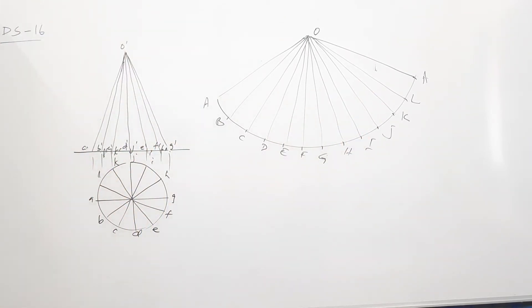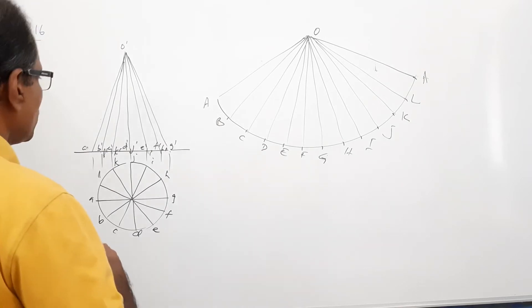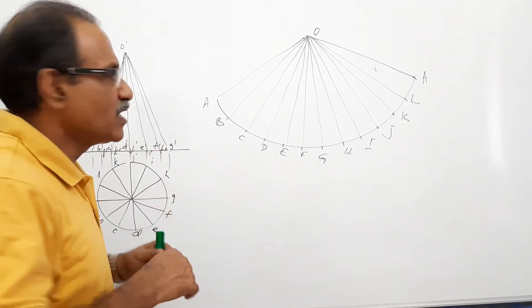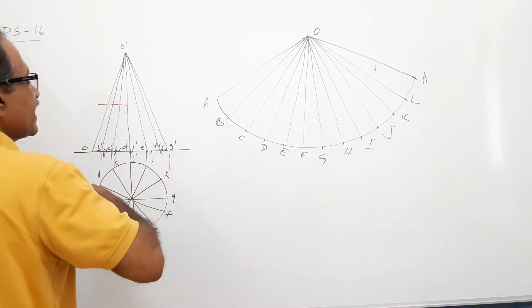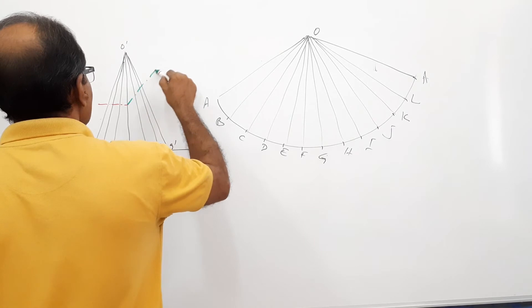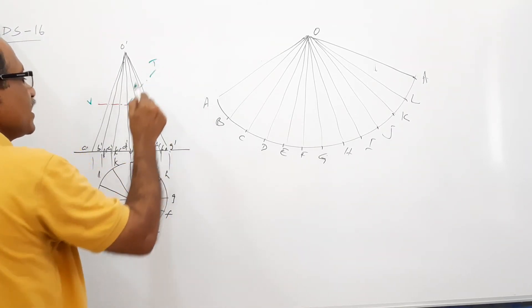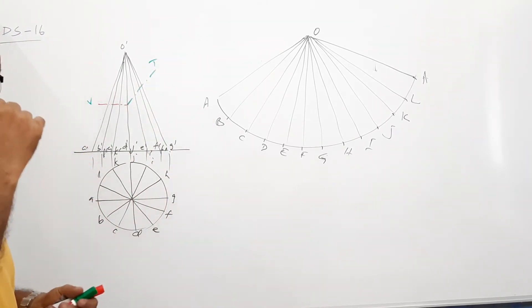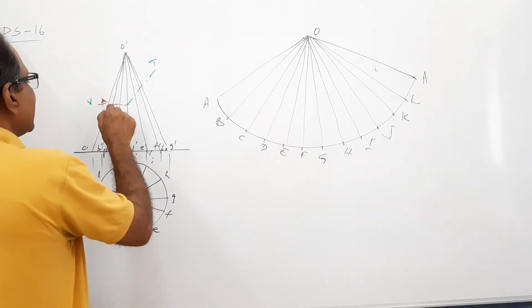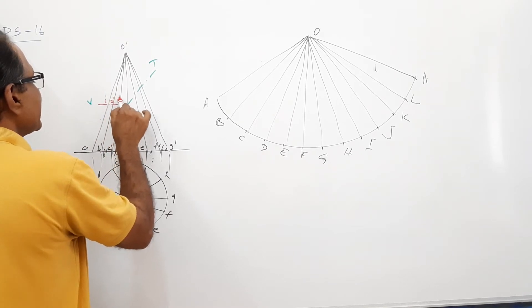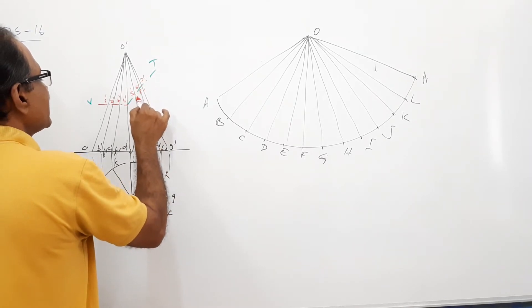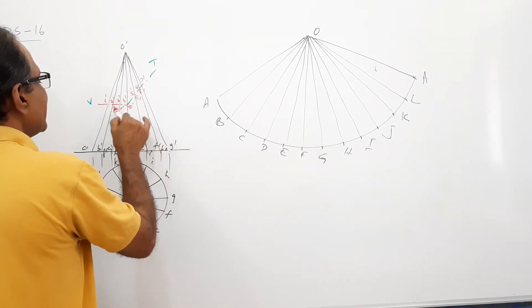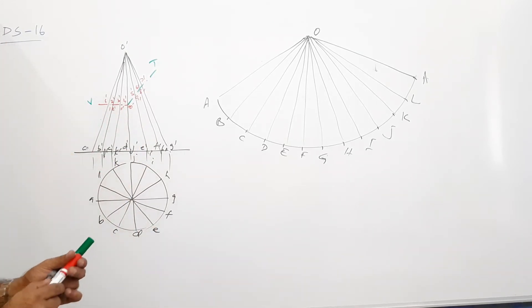Now, this is cut. Where is the cutting plane? The question says, this is cut by two cutting planes which pass through the center. One is horizontal and the other is inclined at 45 degrees to the base. This is the cutting plane. Where all the scenes cut? 1 dash, 2 dash, 3 dash, 4 dash, 5 dash, 6 dash, 7 dash, 8 dash, 9 dash, 10 dash, 11 dash, 12 dash.